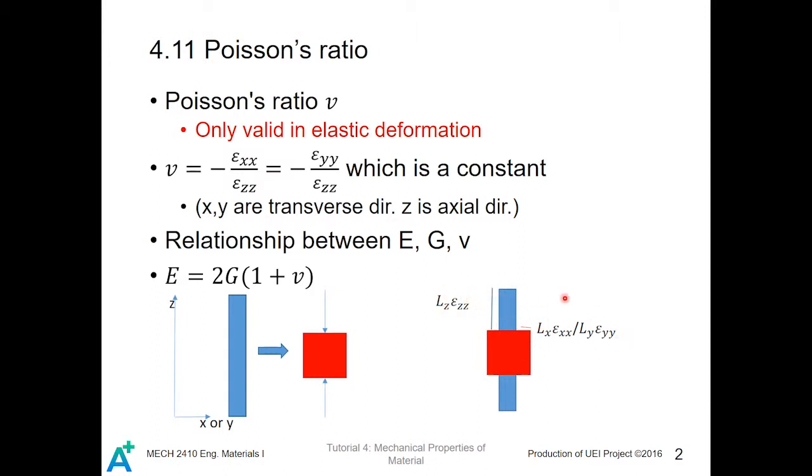At this red portion, it is the elongation along the transverse direction. It can be in x coordinate or in y coordinate, and this is equal to the x-direction original length times the x-direction strain under the loading, or y in terms of y.